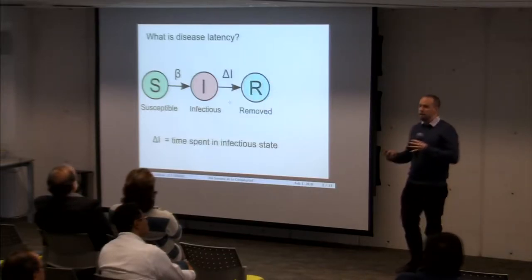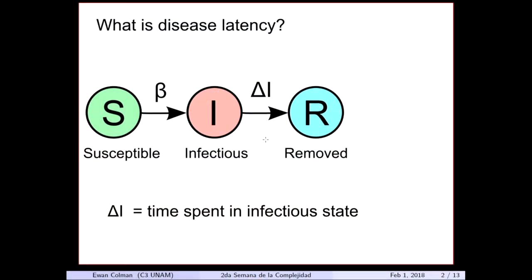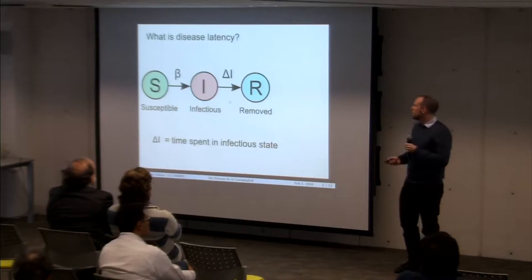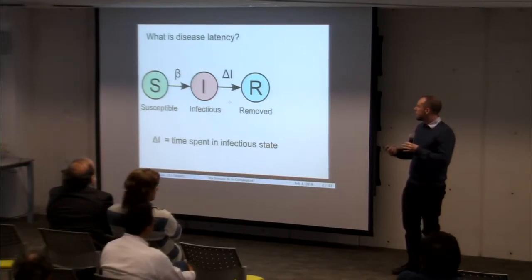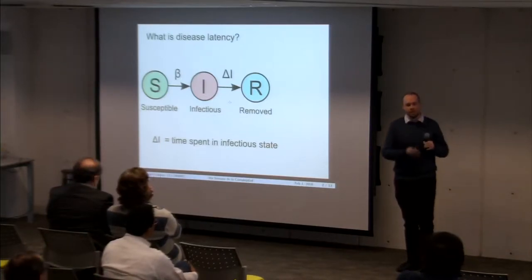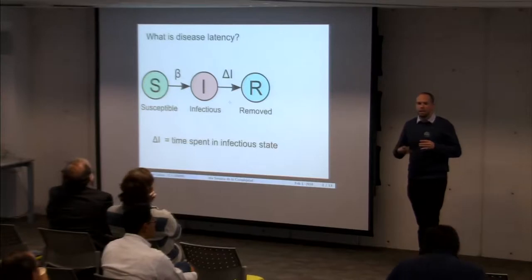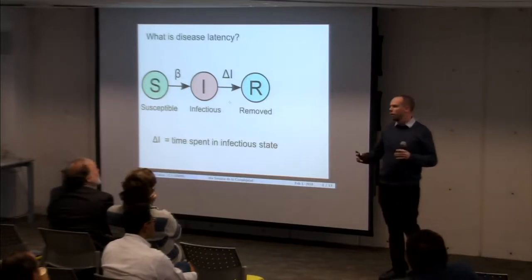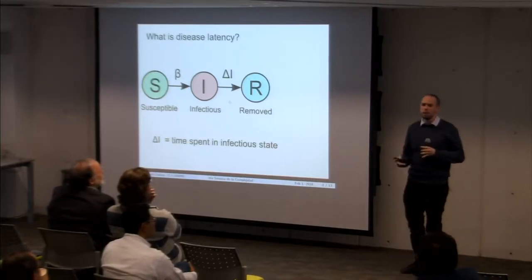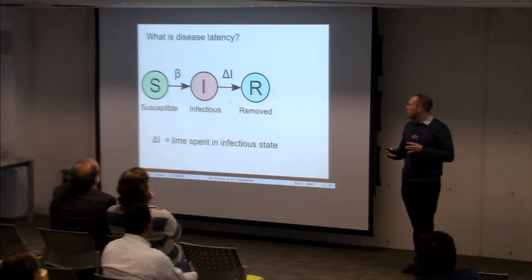To make the simulation a little bit more complicated, we could add in a recovered or removed state. To simulate that, you have to add in an extra parameter: the length of time that someone stays in the infectious state before transitioning to the removed state. That's what we call the infectious period. Intuitively, if the infectious period is long, that gives people a very long opportunity to infect other individuals.